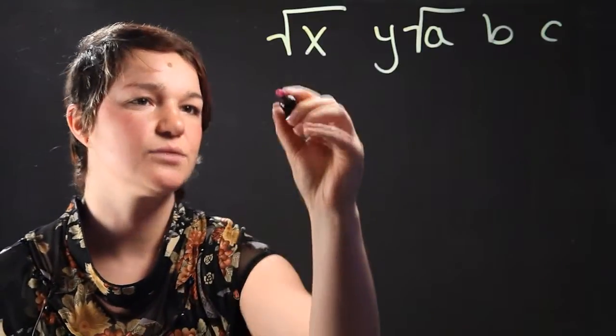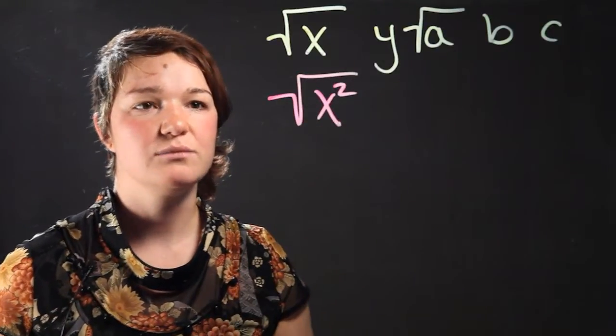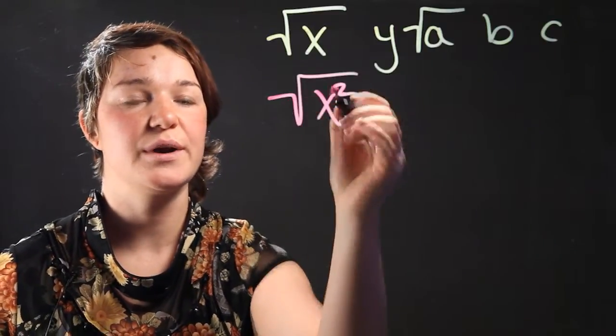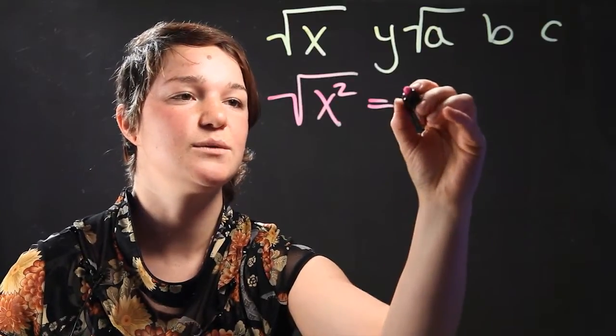let's do square root of x squared. Now we know that that's a very simple expression and the square root of a squared number is just the number itself. So this is equal to x.